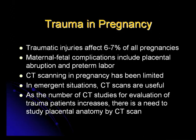Traumatic injuries affect 6 to 7 percent of all pregnancies. Maternal-fetal complications include placental abruption and preterm labor. CT scanning in pregnancy has so far been limited because of concerns for teratogenicity and childhood cancers from radiation. As a result, there have been very few CT studies done on placental anatomy, normal or abnormal. In emergency situations, CT scans are useful because they are faster than MRI, and also more comprehensive for studying the abdomen, retroperitoneum, uterus, placenta, and fetus than ultrasonography. Low-dose radiation protocols make this more acceptable for use in pregnancy.